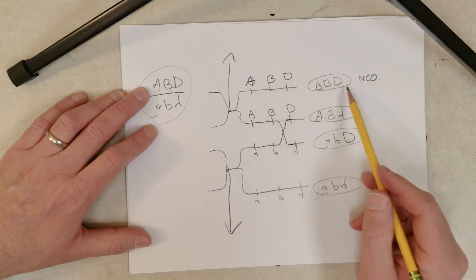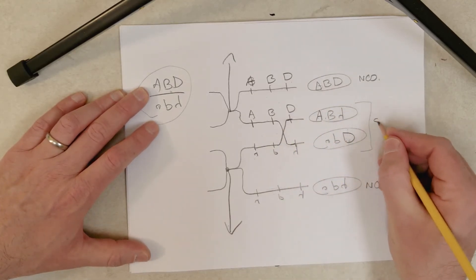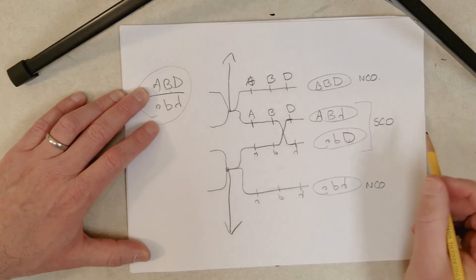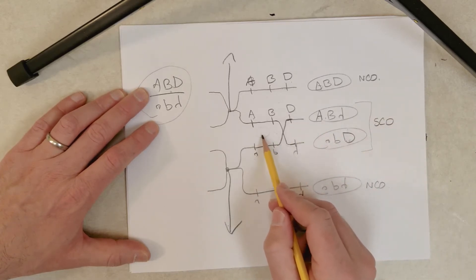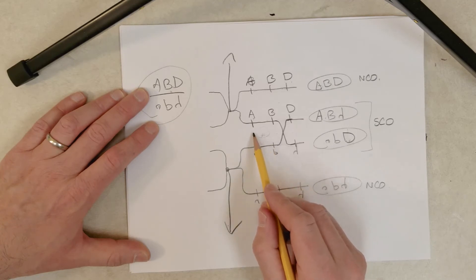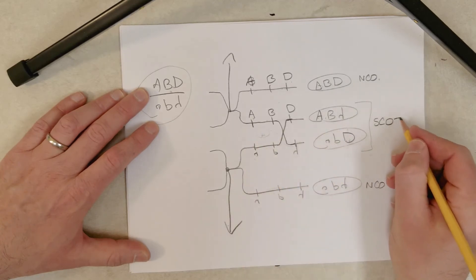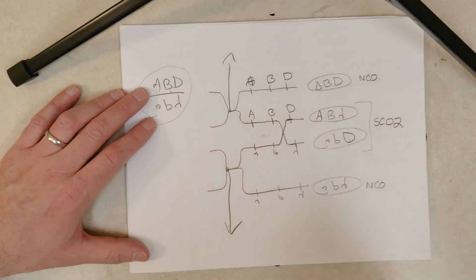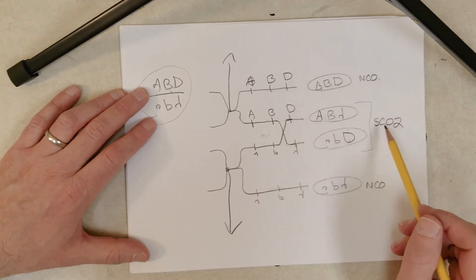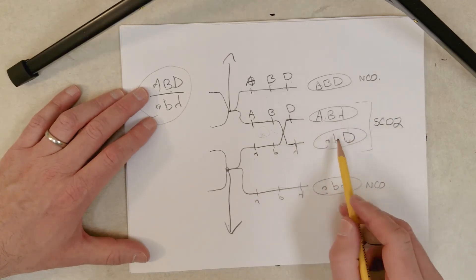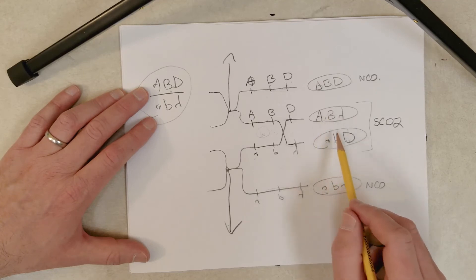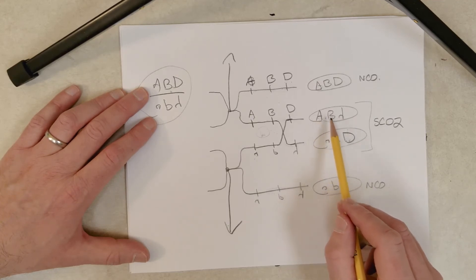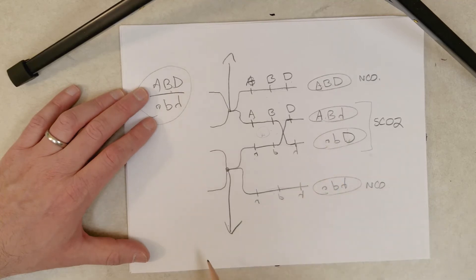These are the crossover gametes — we'll call these single crossover gametes. Because we called the interval-one crossover class one, we can call this one class two. It doesn't matter which is called class one or class two — we have two classes. We can see that these result in genotypes that are reciprocals of one another: big A, big B, little d here; and little a, little b, big D there.